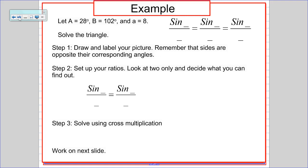So then you're going to set up your ratios. You're going to look at two angles and sides at a time and decide what you can find out. For this one, we will find side B first because out of the information we have, that's the only thing missing. We have A and A, we have big B, but we do not have little b. You're going to solve using cross multiplication, and I've got the work on the next slide.